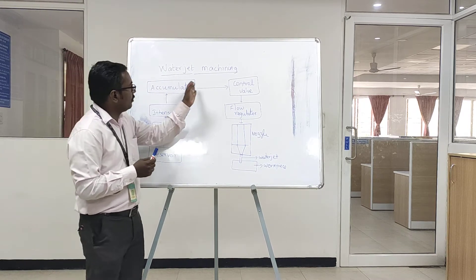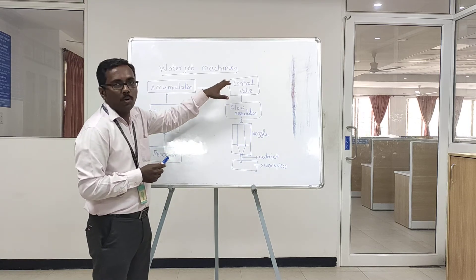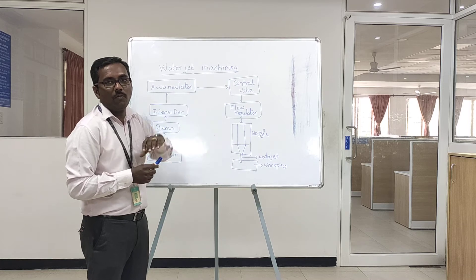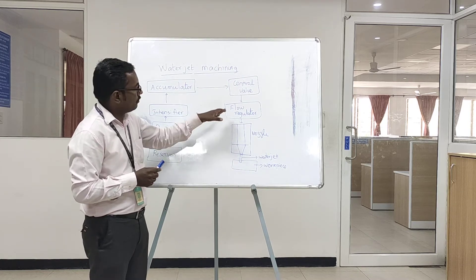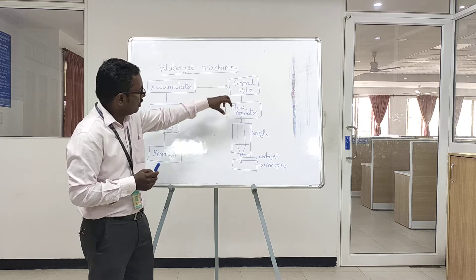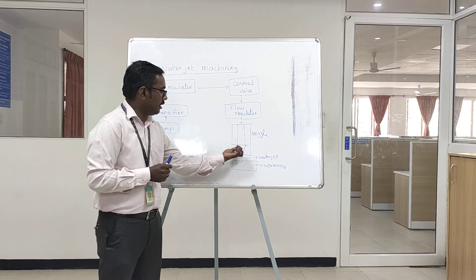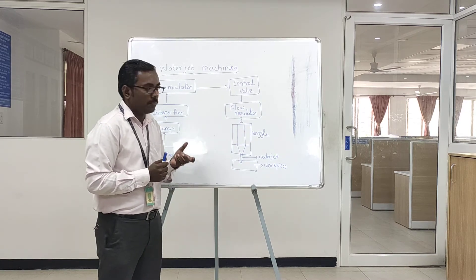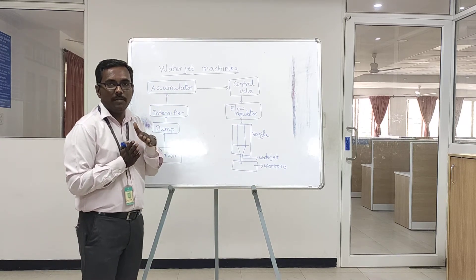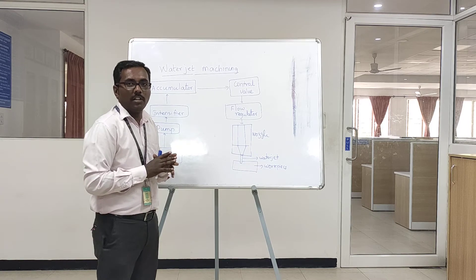The accumulator is a temporary storage for the pressurized water. From the accumulator, the water flows through the control valve, which is used to control the flow of water. Then the flow of water passes through the flow regulator and then through the nozzle. The main function of the nozzle is to increase the kinetic energy of the water.